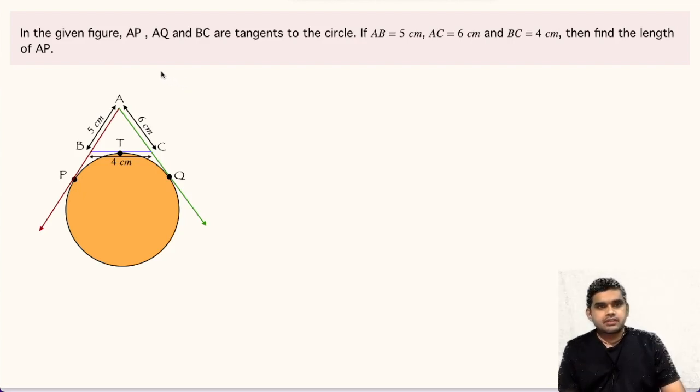In this question, it is given that AP, AQ and BC are tangents to the circle shown. Measure of AB is 5 centimeter, AC is 6 centimeter and BC is 4 centimeter. We are asked to find the length of AP.